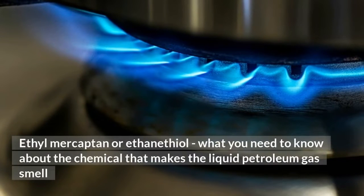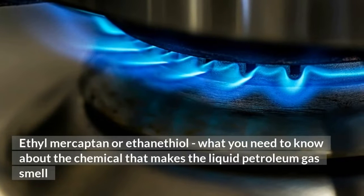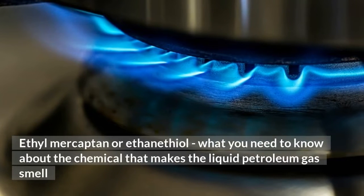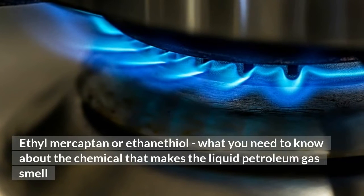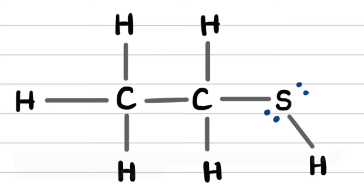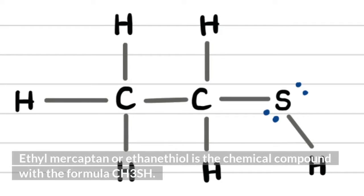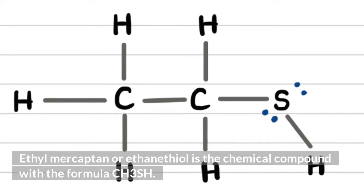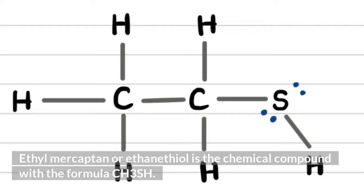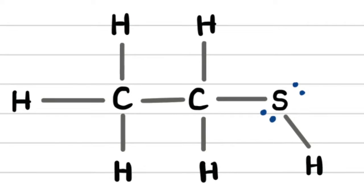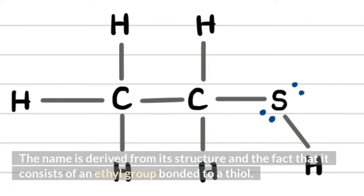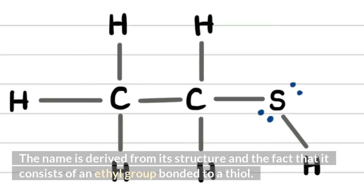Ethyl mercaptan, or ethanethiol — what you need to know about the chemical that makes liquid petroleum gas smell. Ethyl mercaptan, or ethanethiol, is the chemical compound with the formula CH3SH. The name is derived from its structure and the fact that it consists of an ethyl group bonded to a thiol.